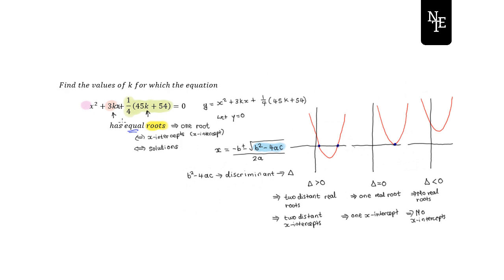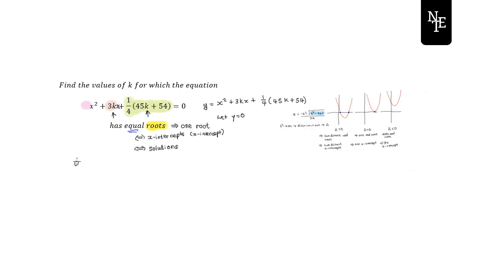This is the theory needed to answer questions where a k value appears inside the quadratic. Going back to the question, first identify a, b, and c from the general form ax² + bx + c. Here, a = 1, b = 3k, and c = ¼(45k + 54).